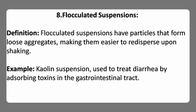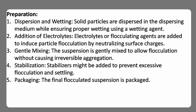Eighth, flocculated suspensions — particles form loose aggregates, making them easier to redisperse upon shaking. Example: kaolin suspension used to treat diarrhea by adsorbing toxins in the gastrointestinal tract. Preparation involves dispersing solid particles in the dispersing medium with proper wetting, adding electrolytes or flocculating agents to induce particle flocculation by neutralizing surface charges, gentle mixing to allow flocculation without causing irreversible aggregation, and adding stabilizers to prevent excessive flocculation and settling before packaging.